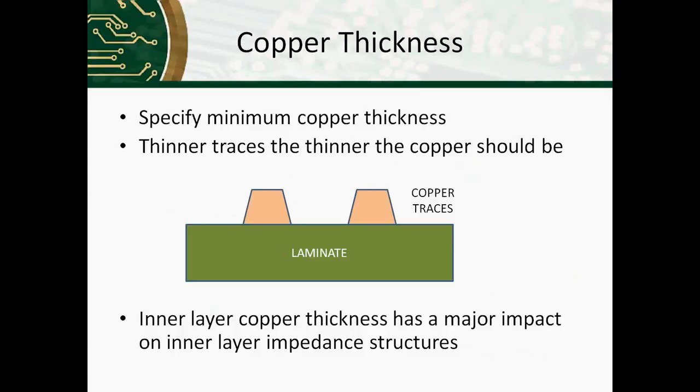If you have traces 5 mils or thinner, we usually recommend half-ounce copper. And certainly with 3 mil traces, it must be on half-ounce. With high power boards or ones that copper is used to move heat around, the thicker copper is often needed. And in those cases, you also have the wider traces. Inner layer copper thickness also has a major impact on impedance structures on the inner layers. You can't freely switch between one ounce and half-ounce without redoing all the calculations for any impedance structures you might have on those inner layers.